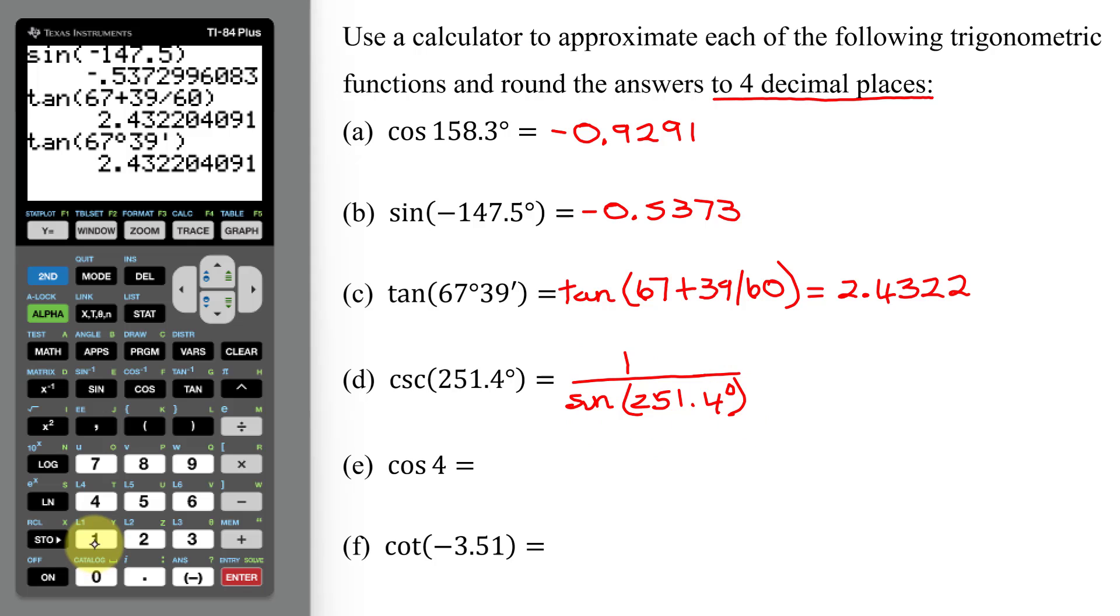So this problem is just 1 divided by the sine of the angle 251.4 degrees. Now I can do this in one step on the calculator. It's 1 divided by the sine of 251.4, close parenthesis, hit enter. Round to the nearest fourth decimal place. That's this one. This one is not going to round it up. So it is negative 1.0551.